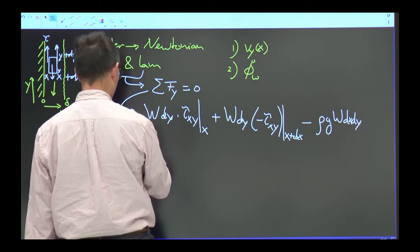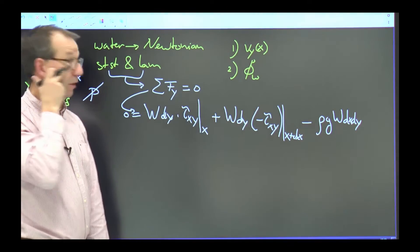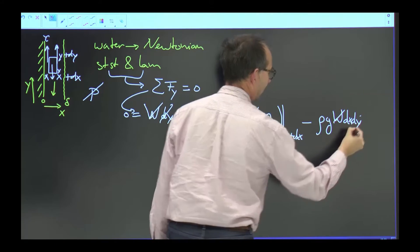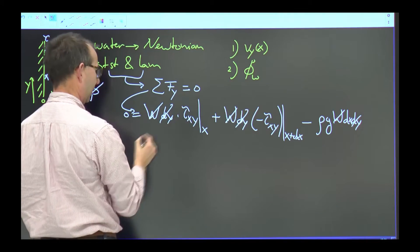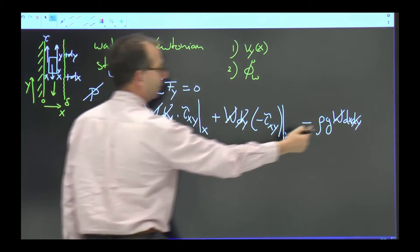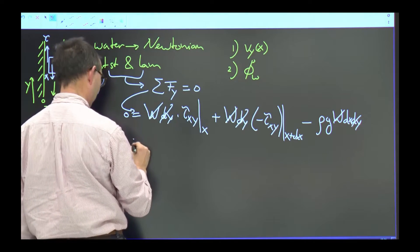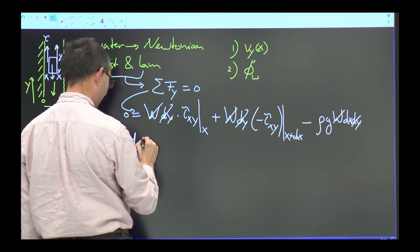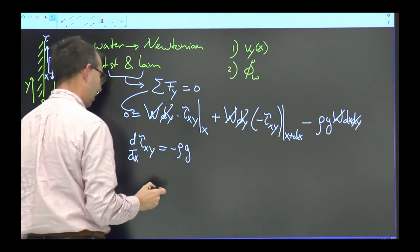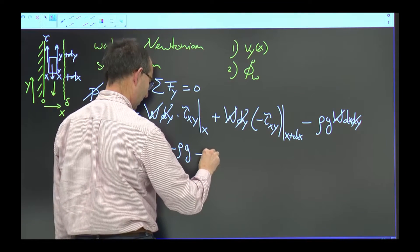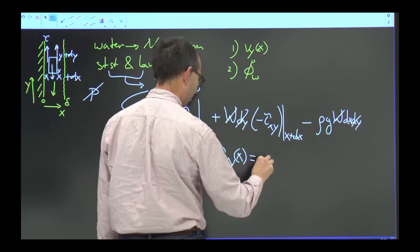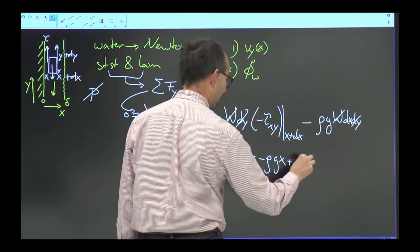This needs to be equated to zero. First, w is a dummy variable that can be cancelled out. I can cancel dy as well since it appears everywhere. Bringing the shear stress terms to the other side: τ_xy at x plus dx minus τ_xy at x, divided by dx, gives the derivative. So the derivative of τ_xy with respect to x equals minus ρg. This equation is relatively easy to solve: the shear stress profile τ_xy as a function of x equals minus ρg·x plus an integration constant c1.